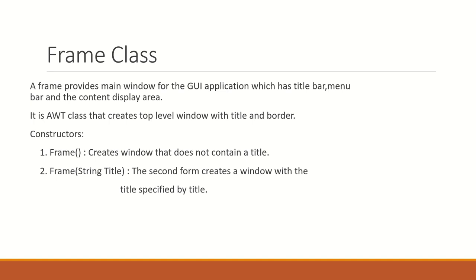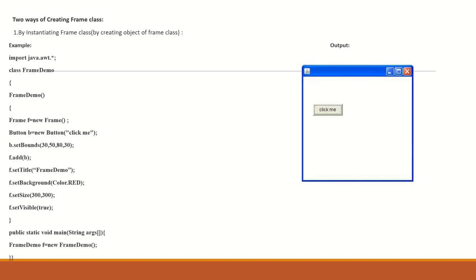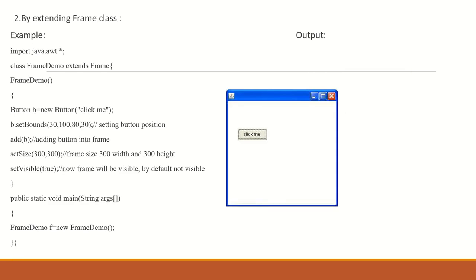There are two types of Frame constructors. First, Frame with no parameter — it creates a frame window without a title. Second, Frame with a title parameter — this constructor creates a window with the specified title. There are two ways to create a frame: first, by instantiating the Frame class (creating an object of Frame), and second, by extending the Frame class.